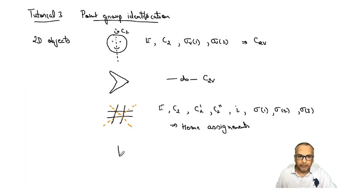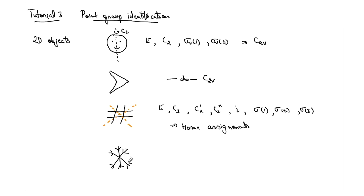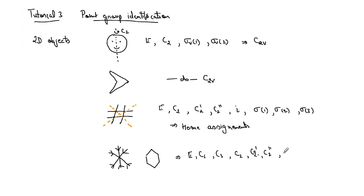Let's look at a snowflake. It has order-6 symmetry, similar to benzene. It has a C6 axis perpendicular to the plane, inversion i, sigma h, sigma d planes, in-plane C2s, and so on. Identifying the exact point group for the snowflake is also left as a home assignment for you to work out.